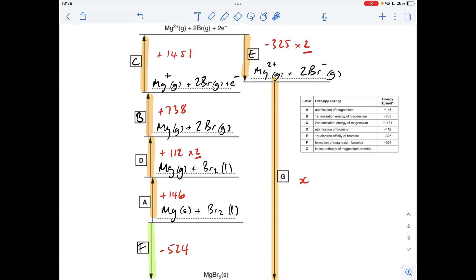And then just quickly Hess's law. So this route here from the element to the solid lattice, so the enthalpy change for that route is minus 524. Hess's law says that this will equal that.